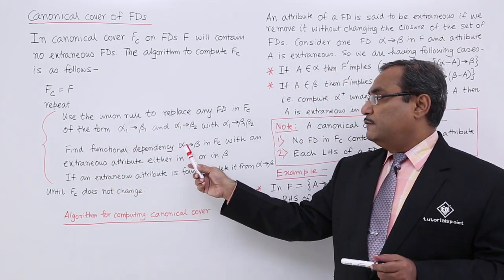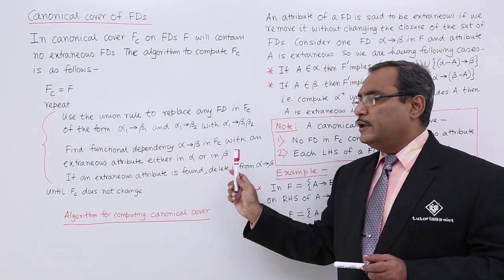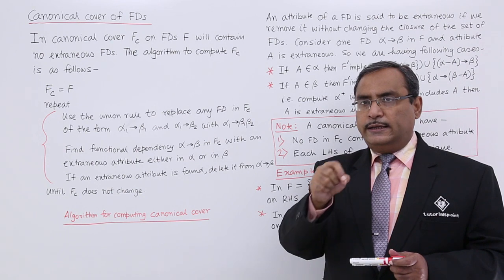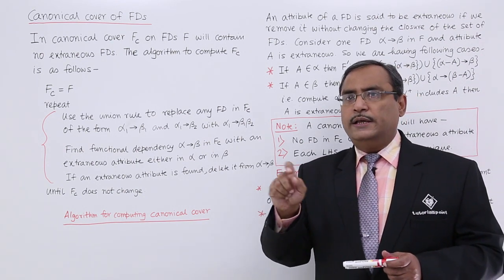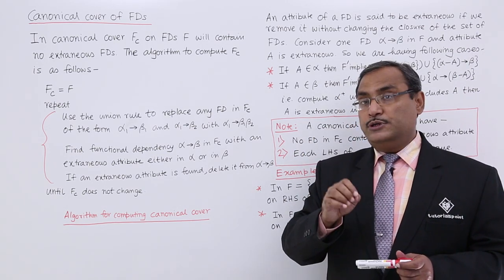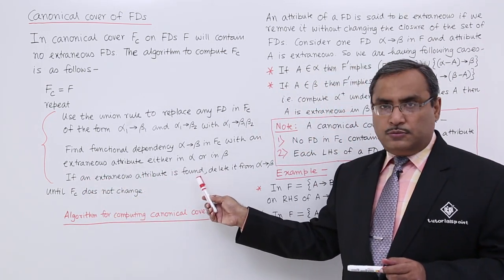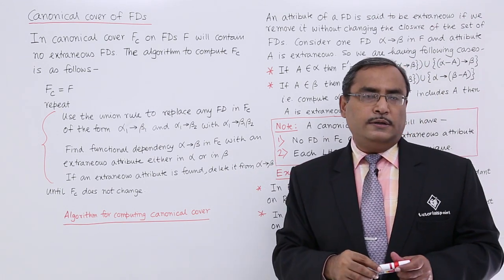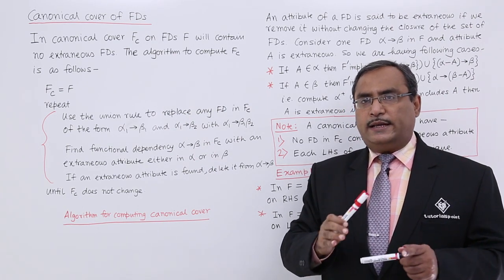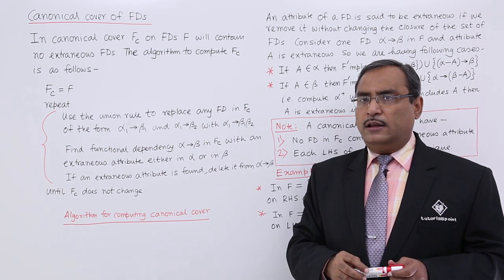Find a functional dependency alpha → beta in fc with an extraneous attribute either in alpha or in beta. We search whether there is some extraneous attribute either in alpha or in beta within a functional dependency already considered in fc. If an extraneous attribute is found, delete it from alpha → beta. In this way we are making our functional dependency set minimal and optimal to get fc, the canonical cover of F.